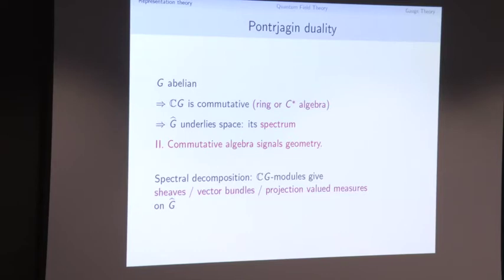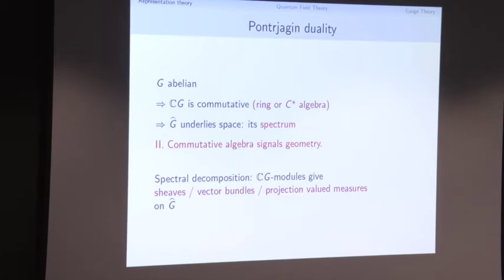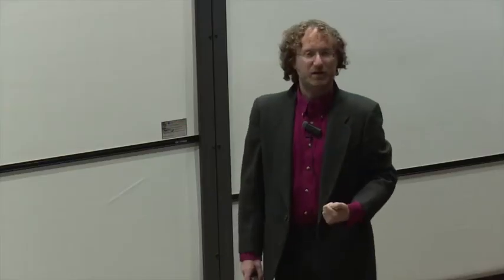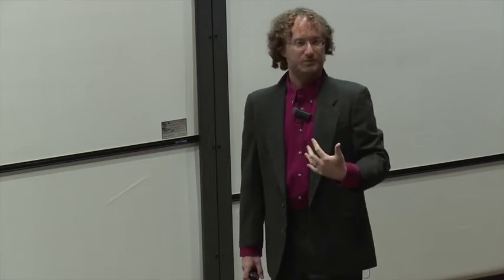This helps us make much more precise the idea of taking representations of a group G and spectrally decomposing them. Modules over this algebra — depending on your setting — give either sheaves, vector bundles, or projection-valued measures on the dual. This is the sense of spectral decomposition.